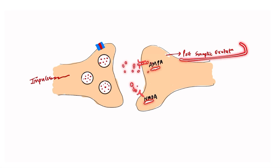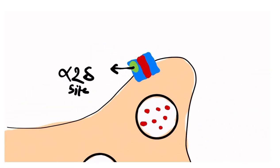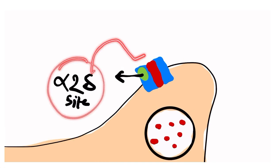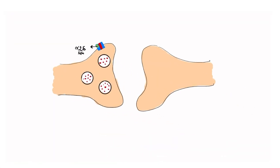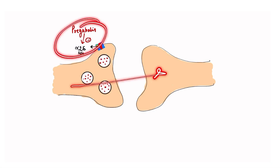This causes postsynaptic excitation, and this is how neurotransmission works. There is a site called the alpha-2-delta site on the voltage-gated calcium channel, which modulates the entry of calcium into the presynaptic neuron. Pregabalin acts on this site and inhibits it, thereby inhibiting calcium entry into the presynaptic neurons and thus inhibiting neurotransmission.